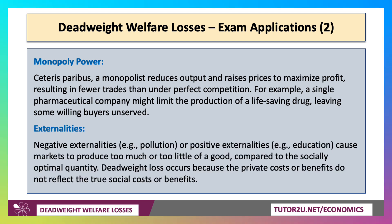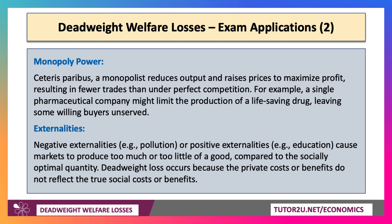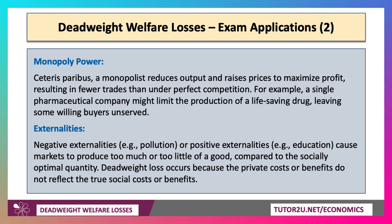And of course, with externalities — you've probably used this concept in your market failure diagrams. Negative externalities from pollution, positive externalities from healthcare and education, can cause a market on its own to either overproduce, oversupply, overconsume, or supply too little compared to what we would perceive to be socially optimum. And that's the loss of welfare as a result of the divergence between private and social cost and benefit.